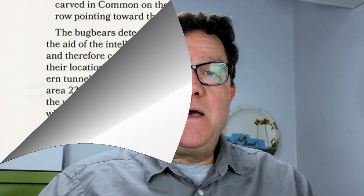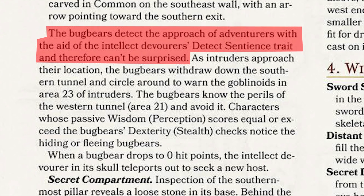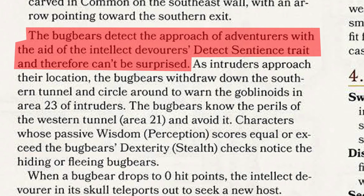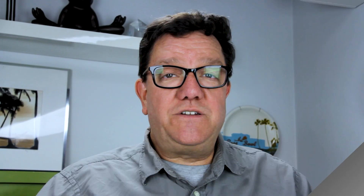Suppose they get through the Hall of Mirrors and reach the bugbears' area before ten turns have passed — could they surprise them? No. Intellect devourers have Detect Sentience: they can detect any sentient creature with an intelligence of three or above within 300 feet, and with that ability they can't be surprised.